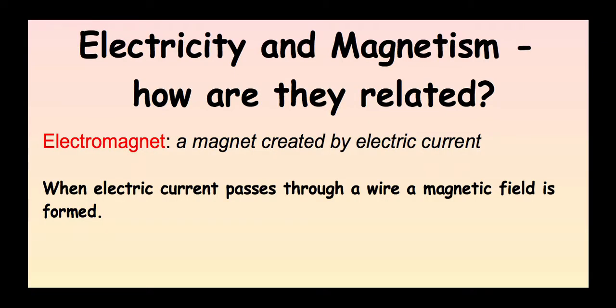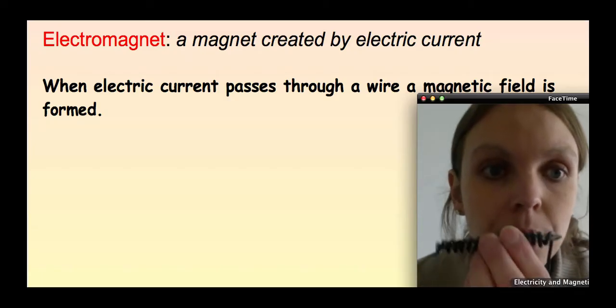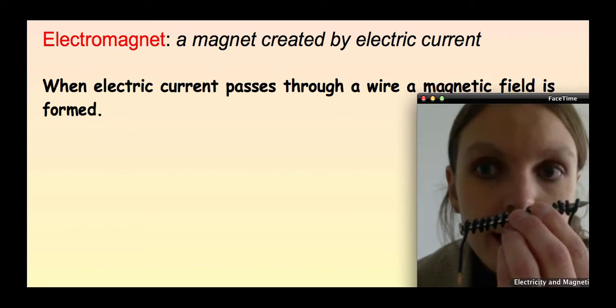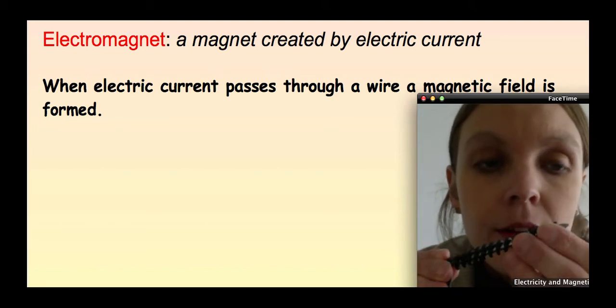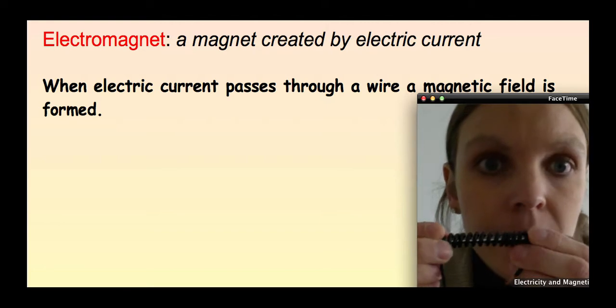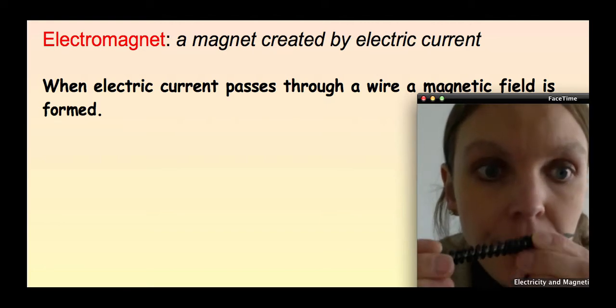So, we can finally answer this question now. How are electricity and magnetism related? So you need to know this term. An electromagnet is a magnet created by an electric current. So remember there were those three types of metals. If they are electrified, they become magnets. So when an electric current passes through a wire, a magnetic field is formed. In your lab, you created an electromagnet. So the nail became an electromagnet by passing current through the wire.